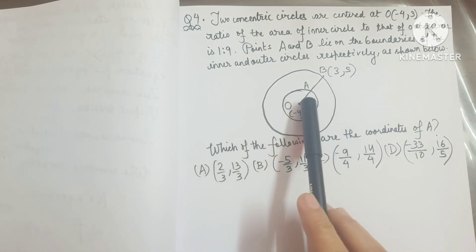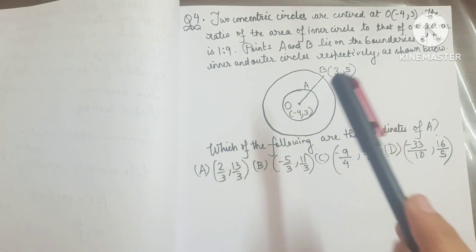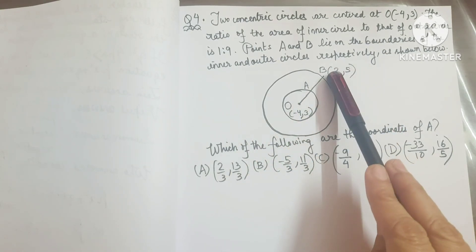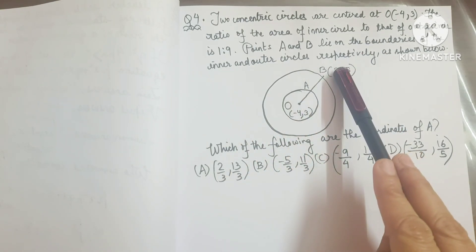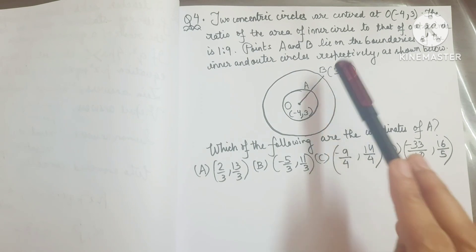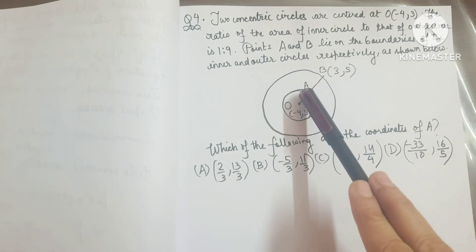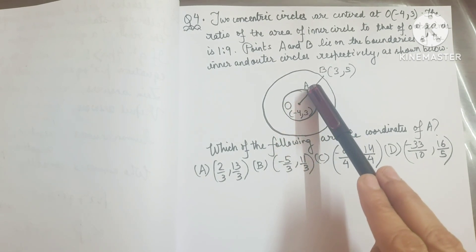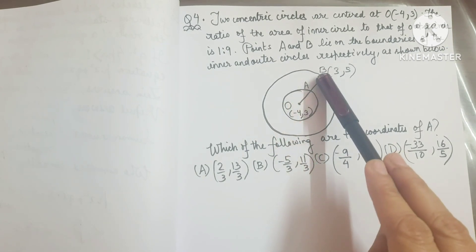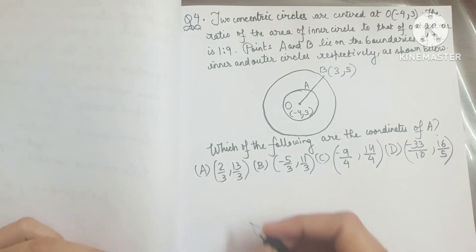We need to find the coordinates of A. A lies between O and B, so the section formula applies. For that, we just need to find the ratio OA to AB. The given information will lead us to the answer — if we track the given values step by step, the answer will come out. Area of inner circle by area of outer circle is 1 by 9.